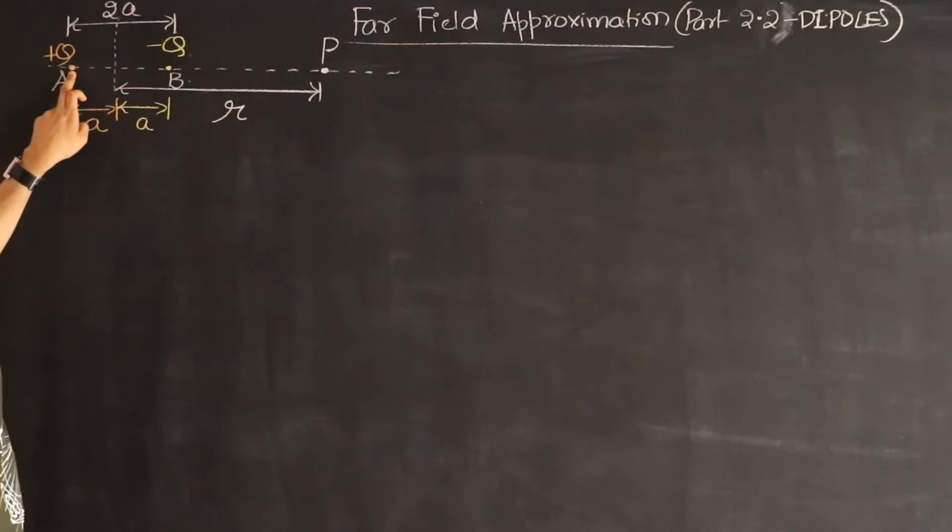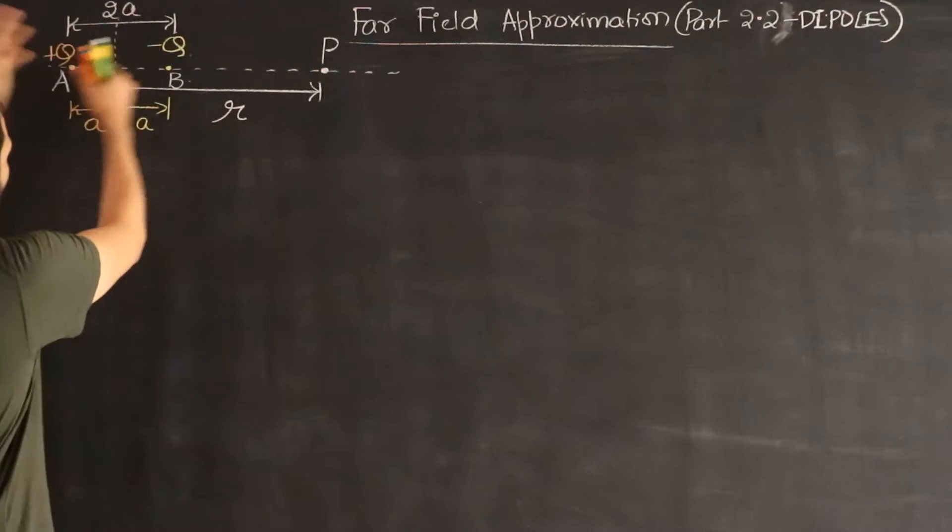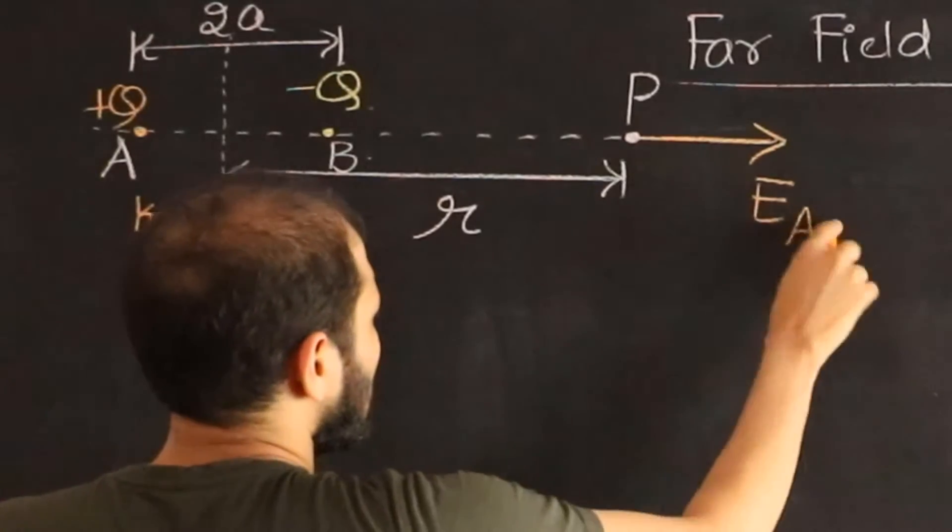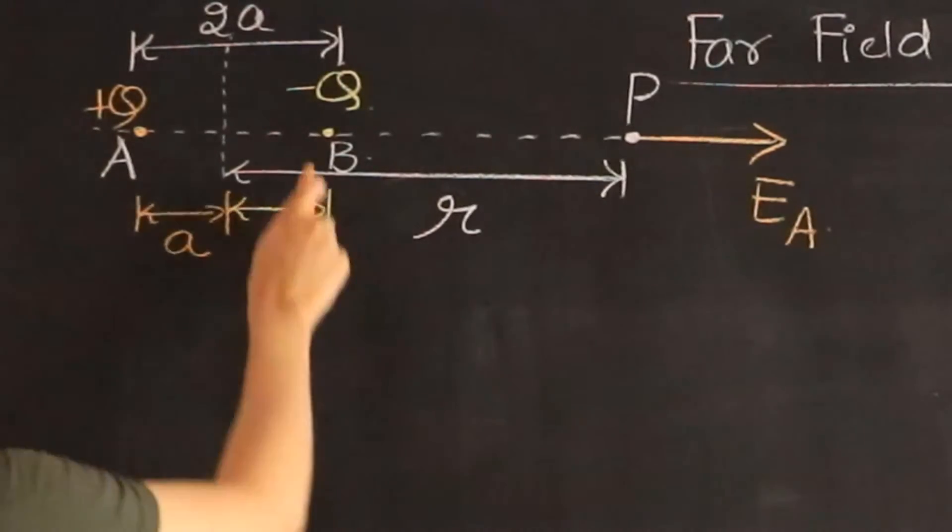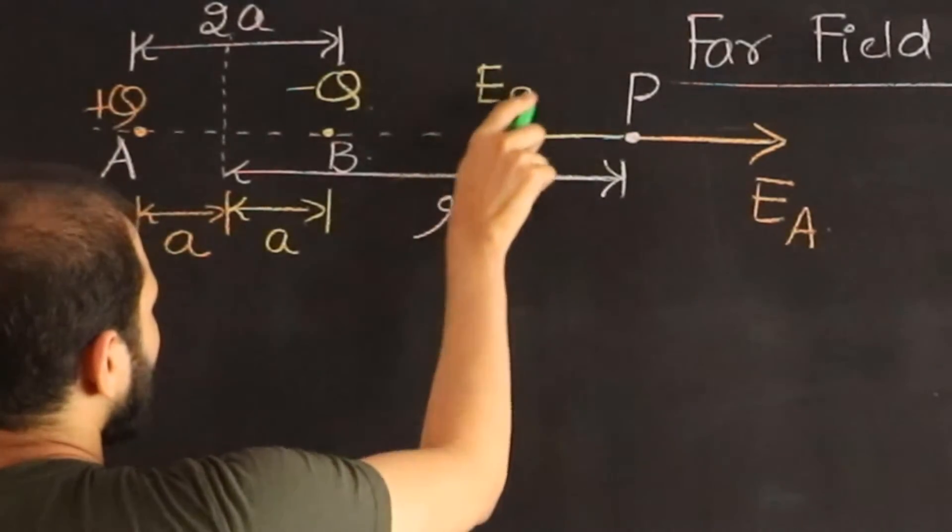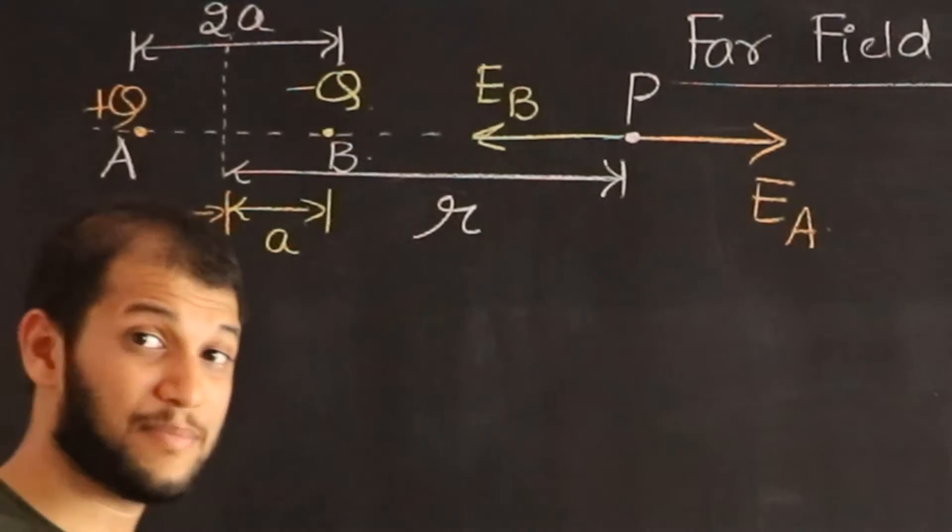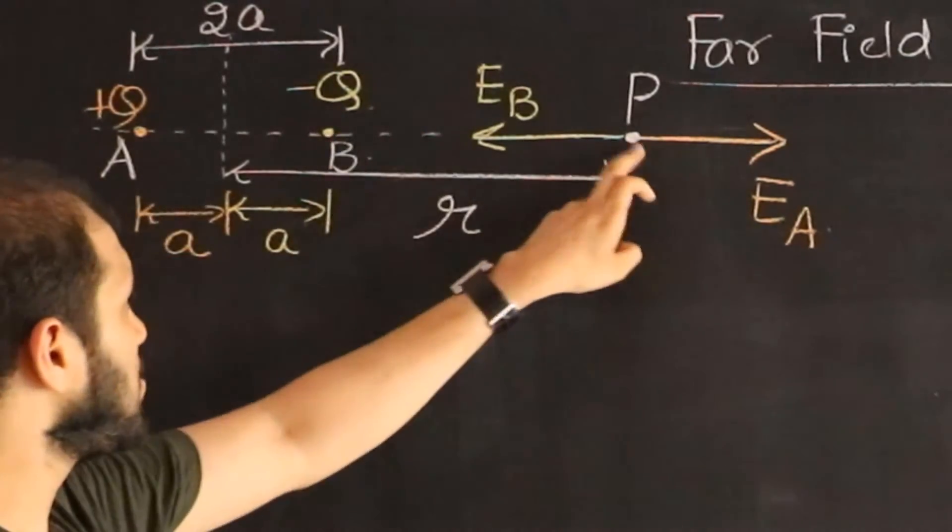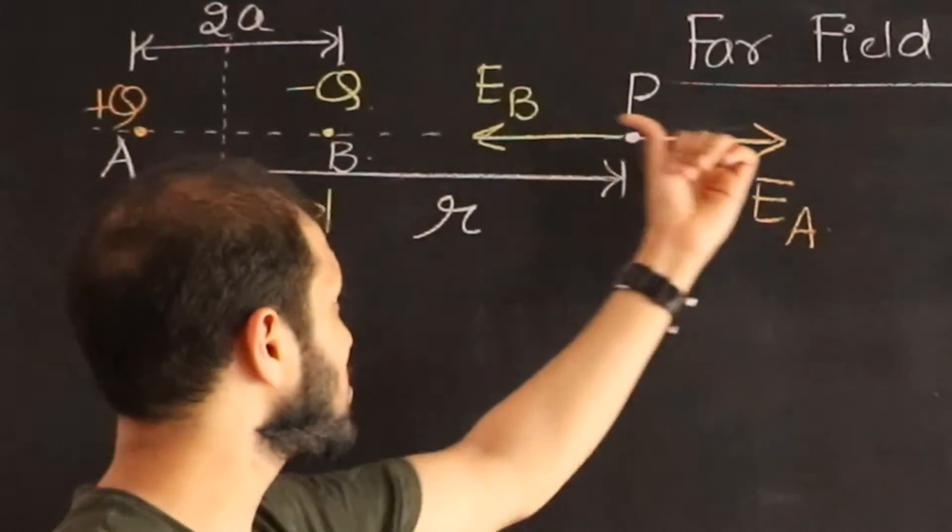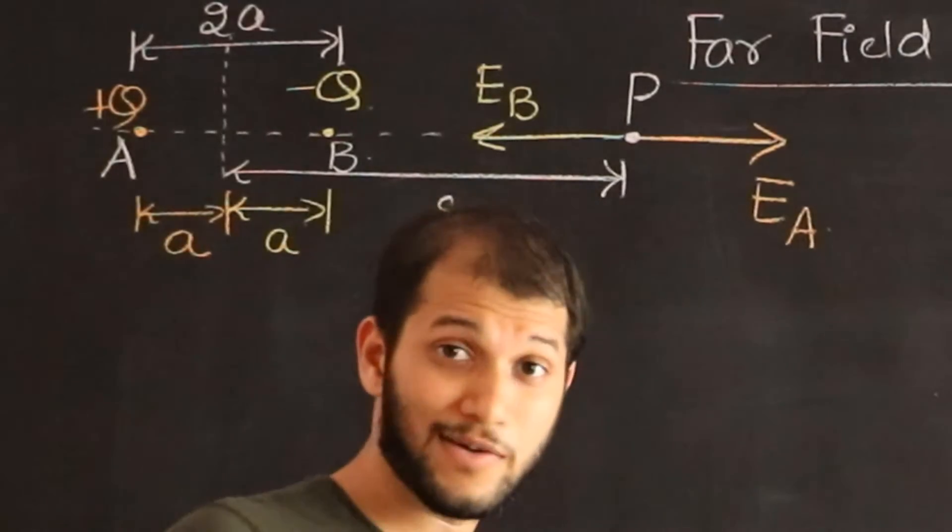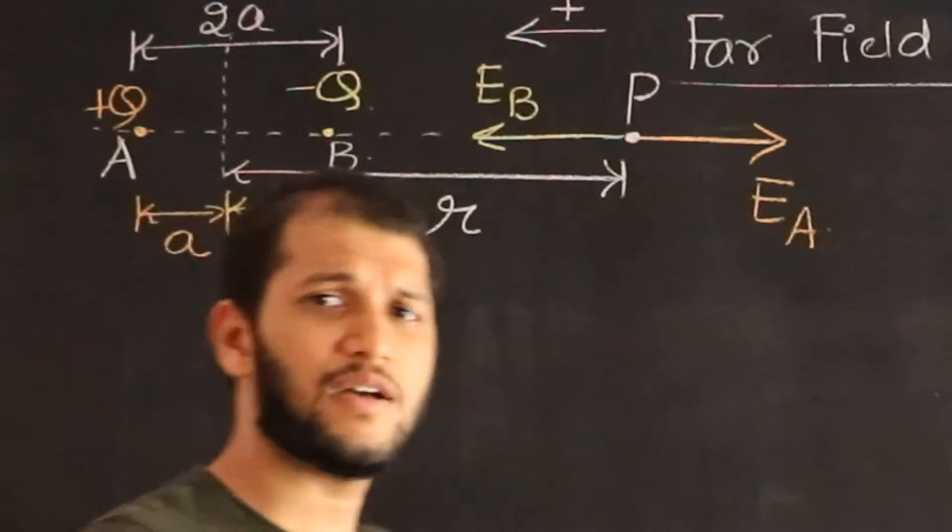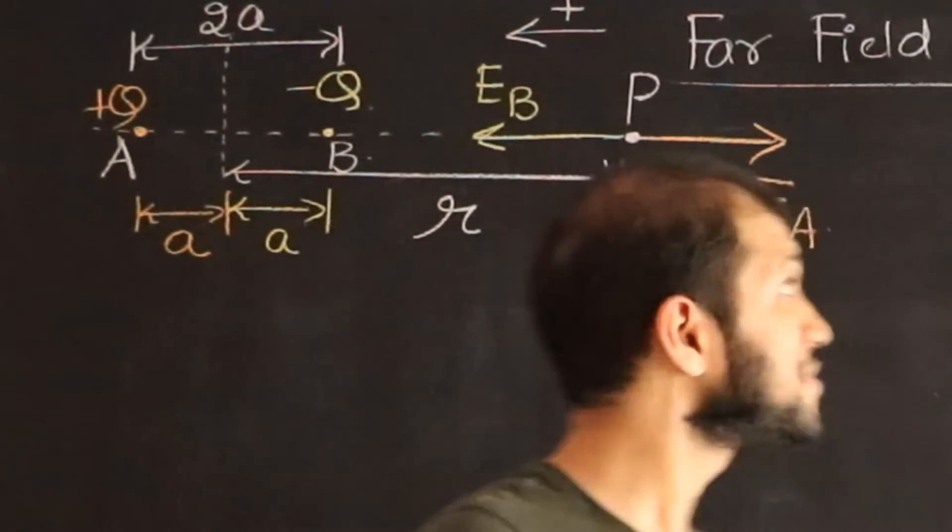We know that the electric field due to this charge, charge A, at this point should be outwards and that electric field, I'm going to call it as E_A, is in this direction. And the electric field due to this charge over here is going to be negative and that electric field is going to be in this direction. I'm going to call this electric field E_B. Since the point P is closer to negative charge, this electric field is going to be a little bit stronger. So I know that the net electric field is going to be in this direction. I'm going to call this as a positive direction, so that in our final answer we're going to get a positive number.